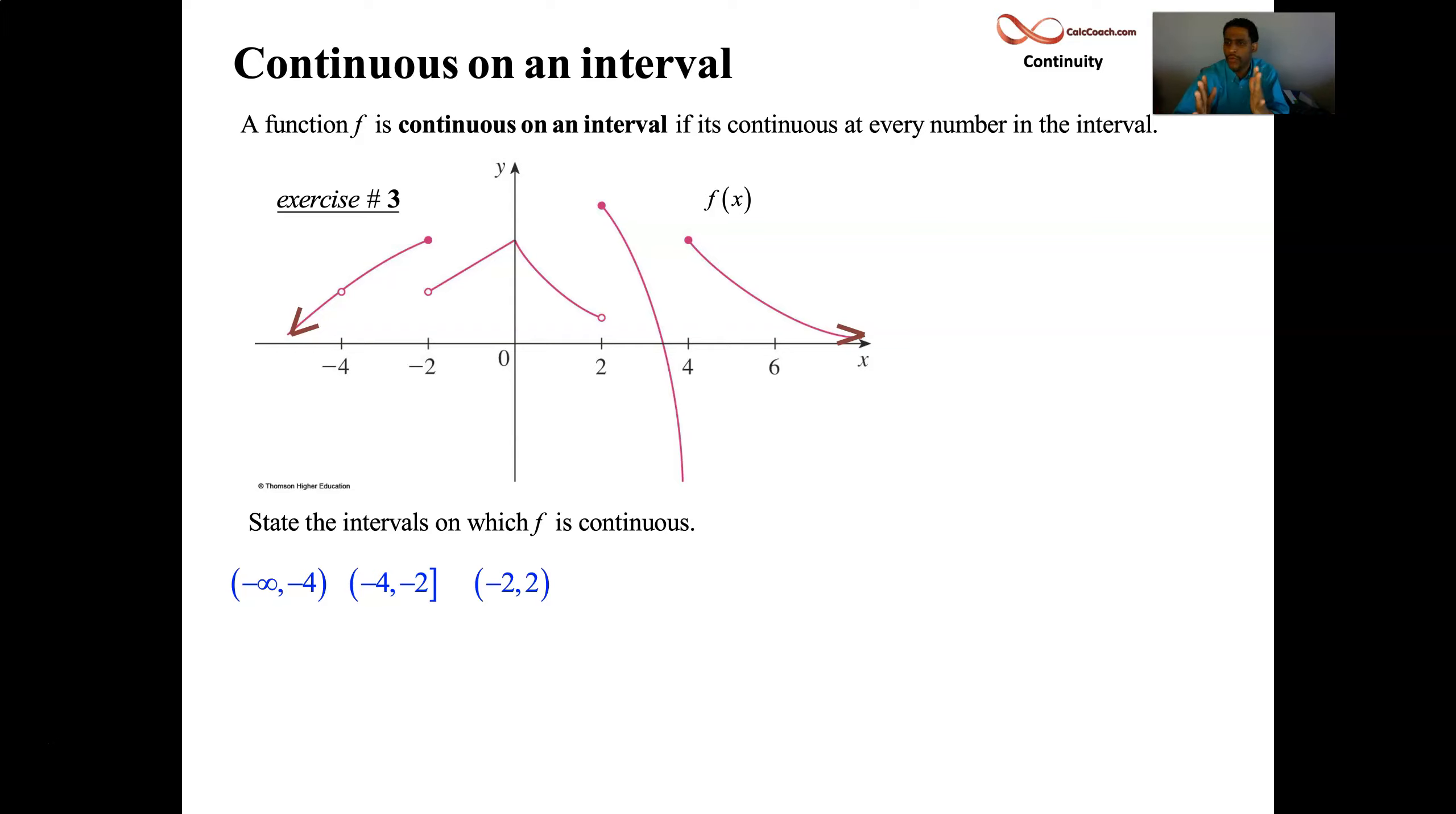Next interval, 2 to 4. You're continuous there. At 4, you're going to dive down to minus infinity. And then at 2, you're going to be headed towards, at least on the right-hand side, where the function is at. If you're headed to where the function is at, you can use a square bracket. So 2 to 4 with a square bracket on 2, not on 4, though.